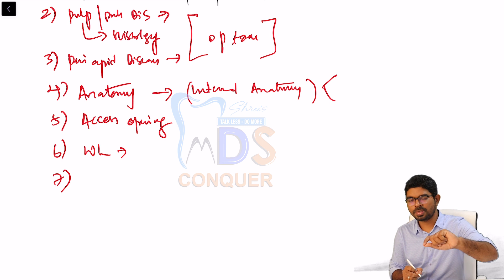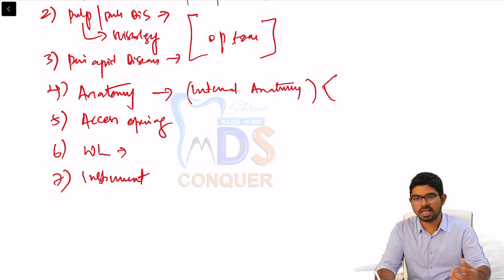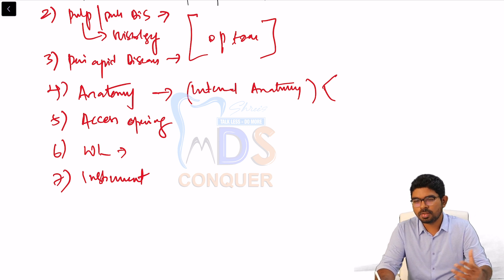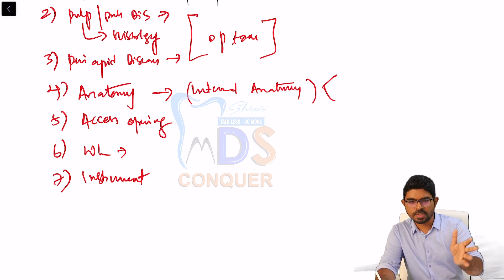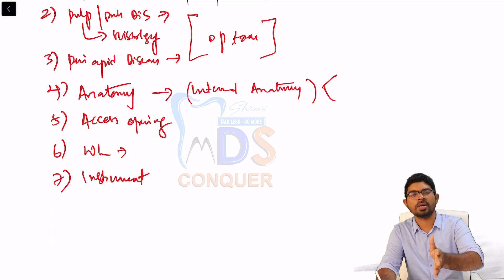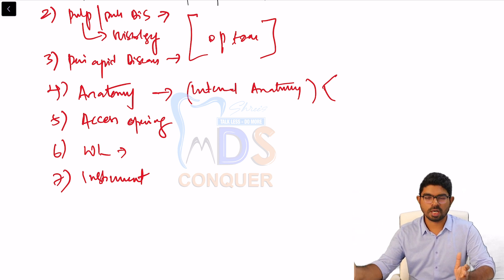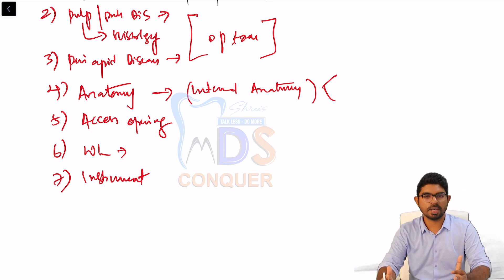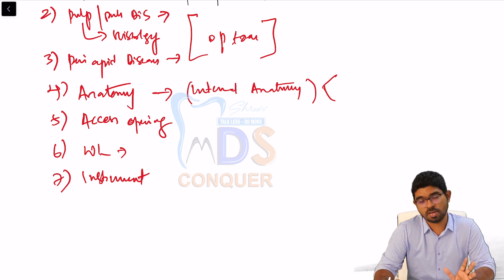Moving to instrumentation: what is DG-16, CK-17? What are endo access opening burs, Z-bars? What instruments are used at different levels — during access opening, biomechanical preparation, obturation, and post and core? What are GG drills, Peeso reamers? These are diagram-based or conceptual questions they can ask you.